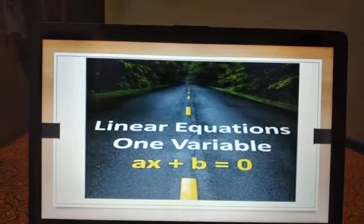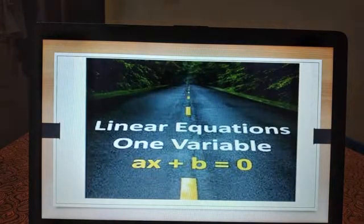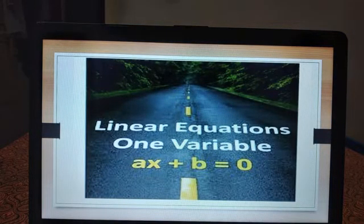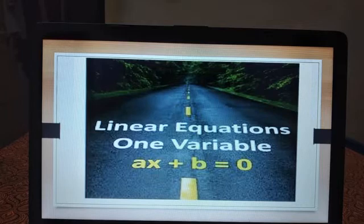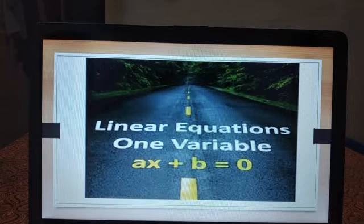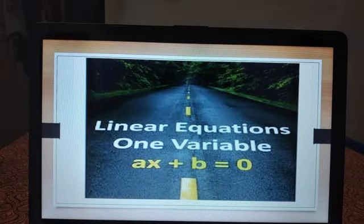What is meant by a linear equation? A linear equation, when plotted on a graph, gives a straight line. Its standard form is ax plus b equal to 0. Here x is called the variable, a is called the coefficient, and b is called the constant.